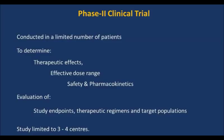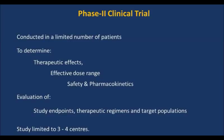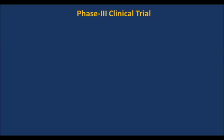Phase 3, or therapeutic confirmatory trial, aims to obtain adequate data about the efficacy and safety of drugs in a larger number of patients of either sex, in multiple centers, usually in comparison with a standard drug and/or a placebo if the standard drug does not exist for the disease under study. This is to validate efficacy and safety found in phase 2.